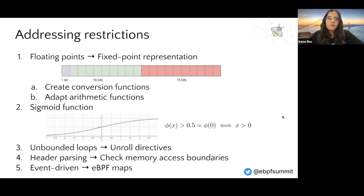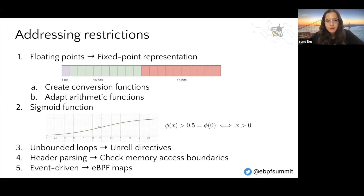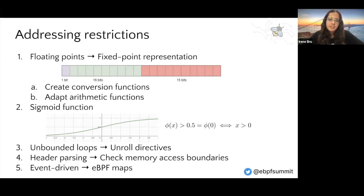Our proposal to avoid these restrictions is to use a fixed-point representation to substitute the floating points. This means using 32-bit integers to represent floating points, using 1 bit for the sign, 16 bits for the integer part, and 15 bits for the fractional part. To avoid the sigmoid function used in the last layer, we can take into account that it is a continuous and strictly increasing function, so we can make the classification by just comparing its inputs.